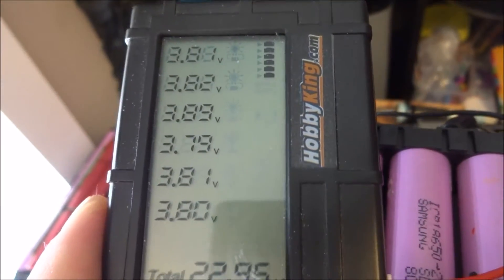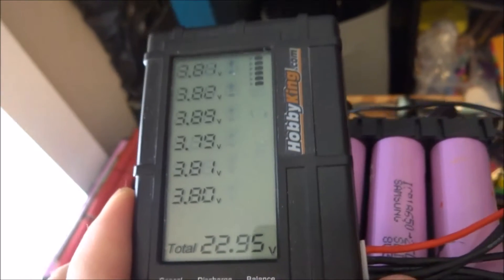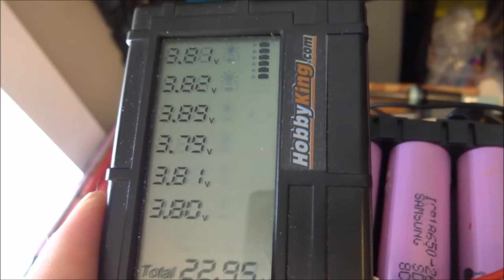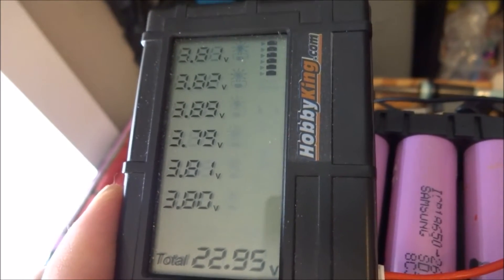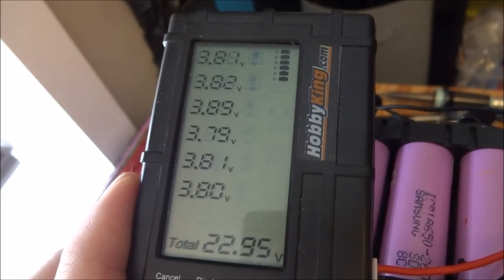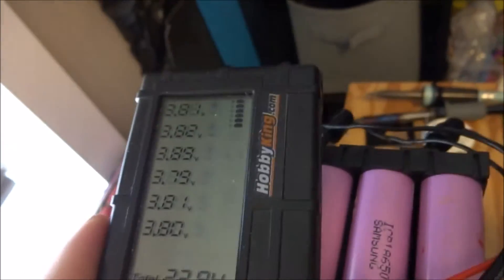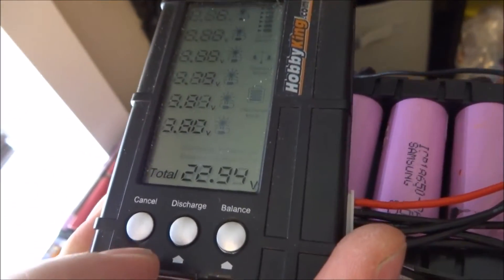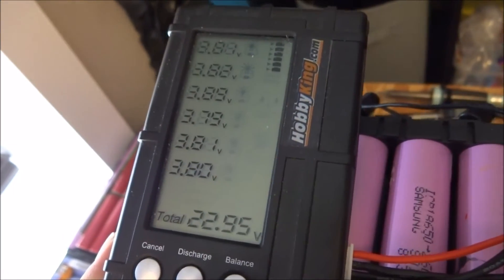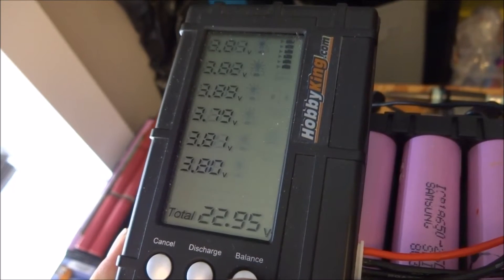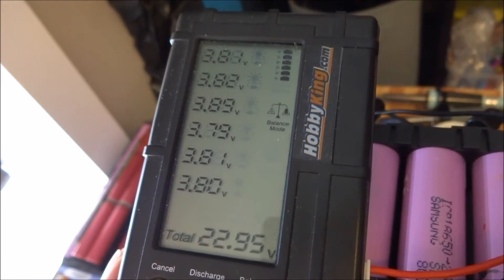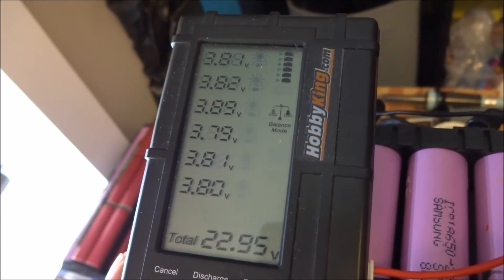Its storage mode was a bit higher than what I wanted, so now the ones are at 3.8. So there's a balance function here. If I hit balance, nothing's going to happen because I set the required voltage at 3.9. So they all have to be above 3.9 before it starts balancing.